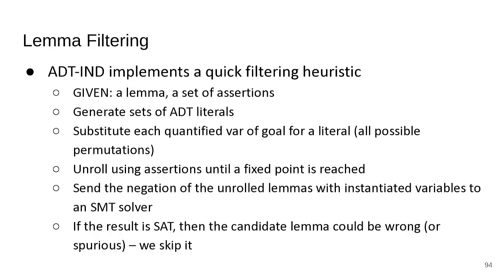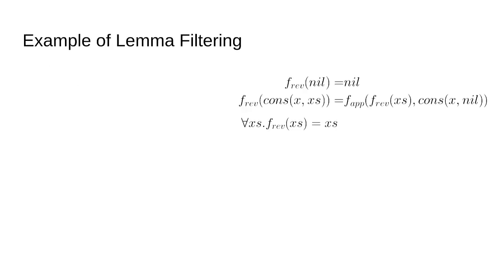If the result is satisfiable, the candidate lemma could be wrong or spurious, in which case we ignore it. For example, suppose we have the definition of reverse and the lemma that for all x, reverse(x) equals x — which intuitively is not true.